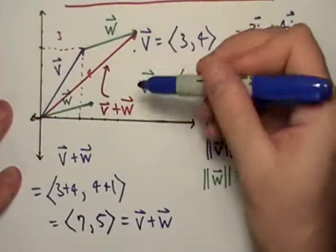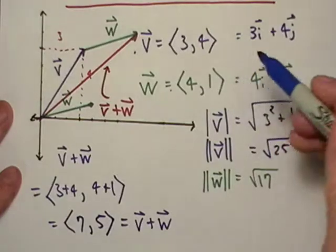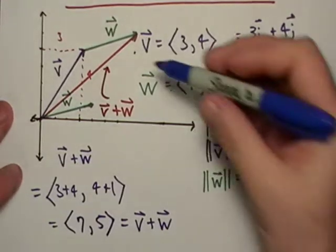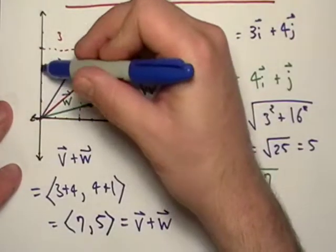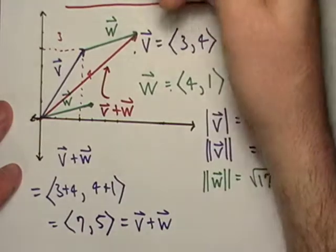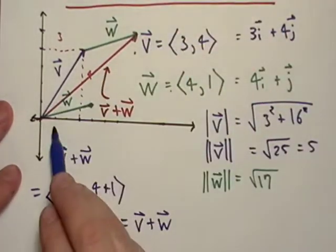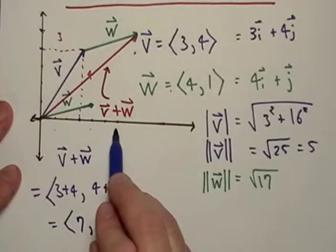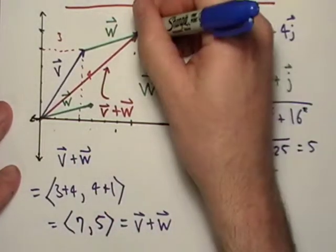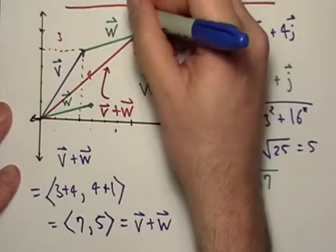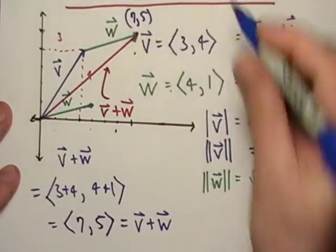If we did this right and count over, it should be about 7 over and 5 up. So 1, 2, 3, 4, 5... yes, about 5 units tall. And 1, 2, 3, 4, 5, 6, 7 over. Yes, this new vector indeed terminates at (7,5).